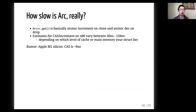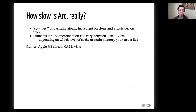How slow is Arc really, in case you're worried about using Arc instead of cloning? Well, if the data is anything concise, it is fast — it is almost always faster, actually. Arc is just an atomic increment on clone and an atomic decrement on drop. Roughly on x86, they estimate this is between 30 and 120 nanoseconds depending on which level of cache, and it may be faster on other hardware.